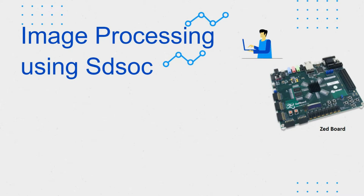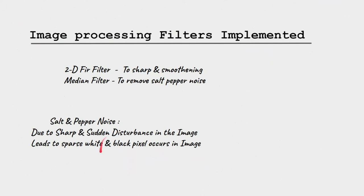Because if an algorithm is running in parallel, it will work much faster than serial execution. That's why when we implement these techniques, we get much faster results. In this video, we discuss two filters: the 2D FIR filter and the median filter. The 2D FIR filter is used to sharpen and smooth the image, and the median filter is used to remove the salt and pepper noise. Both filters were implemented separately and then combined to see the results.